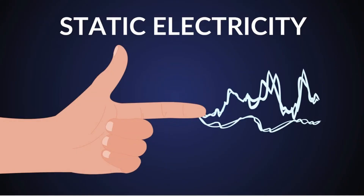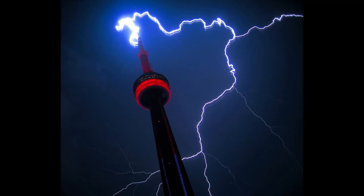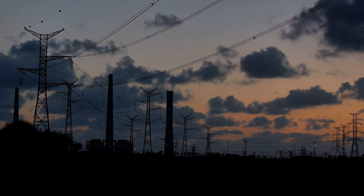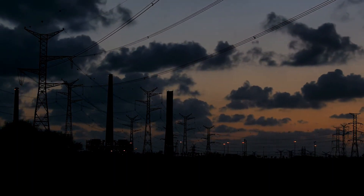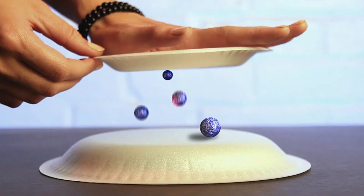Static electricity occurs when an object has electrons added to it or removed from it. Because electrons are negative, when an object has extra electrons it is said to be negatively charged. When an object has had electrons removed, it is said to be positively charged. Static electricity causes many things we see every day. For example, a lightning bolt happens when the static charge on storm clouds builds up and is then discharged to the earth. Electrons can be moved from one surface to another by rubbing.